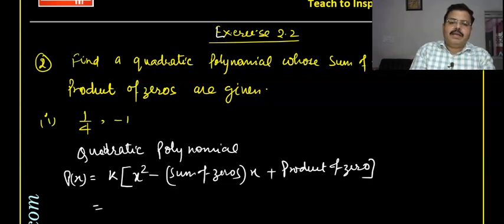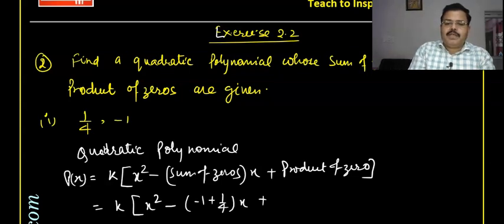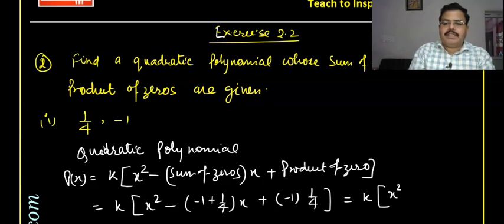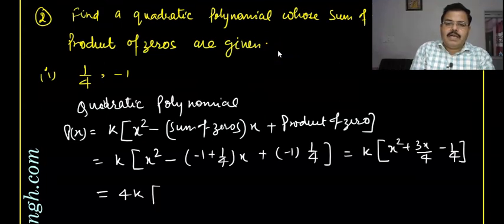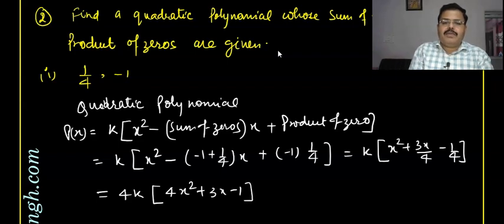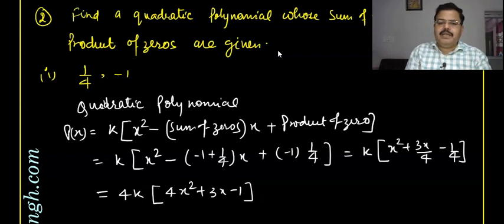So p(x) is the polynomial. Now, k times of x² — sum of zeros is 1/4 plus (-1), that is (1/4 - 1) into x — plus product of zeros is (-1) × (1/4). That gives k times of x² + 3x/4 - 1/4, which can further be written as k times (4x² + 3x - 1), and this is the polynomial. The constant can be adjusted since this is a basic polynomial.